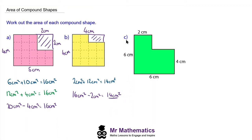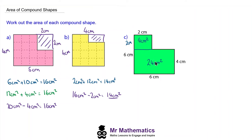Okay, do you want to try and work out the area in question C? You can pause the video and resume it when you're ready. Welcome back. For question C, I'm going to split the shape into two rectangles by drawing a line along here. We know this length must be the total length of six minus the four, so this will be two. Which means this will have an area of four centimeters squared, and this rectangle is six by four, so 24 centimeters squared. So the total area will be four add 24 — 28 centimeters squared.